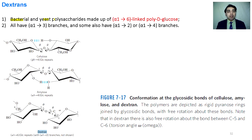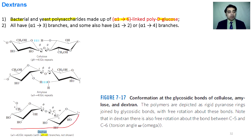Dextrans are bacterial and yeast polysaccharides. They are made up of alpha-1,6 linkages through D-glucose. These molecules also have alpha-1,3 linkages that are not shown in the structure diagram.